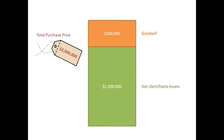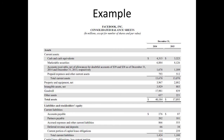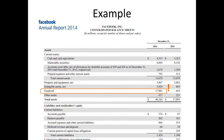So after we consolidate both companies, when I look at the assets section of my balance sheet, we should see a line called goodwill with $500,000 in it. Let's look at an example. Here's the balance sheet for Facebook back in 2014. We can see stuff like cash, accounts receivable, property, and here's a goodwill line — and the number is like $17.9 billion, almost $18 billion. These numbers are in millions, by the way. So that is a whole lot of goodwill.